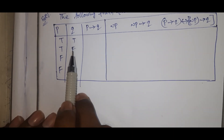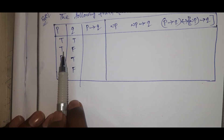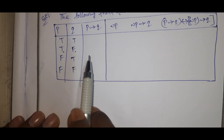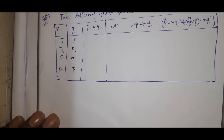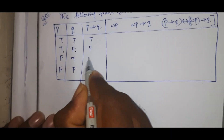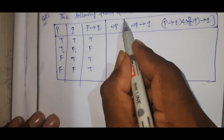For the conditional P→Q: when the first statement is true and the second statement is false, that is false. The remaining values are true. So P→Q values are: true, false, true, true.